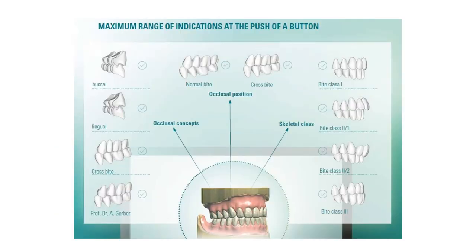The other thing we did with our tooth library is put in several different occlusal combinations. When you're doing your tooth setup, you can pick buccal, lingual, crossbite, or any combination. It will come in the software in perfect occlusion, which really saves a lot of time and energy when doing denture teeth setup, because you know it's going to function perfectly in whatever occlusal setup you chose.